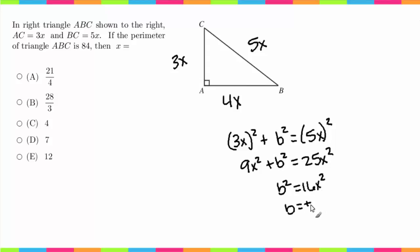b squared equals 16x squared. b equals plus or minus 4x, but of course we're only going to be dealing with a positive because it is a distance which must be positive.